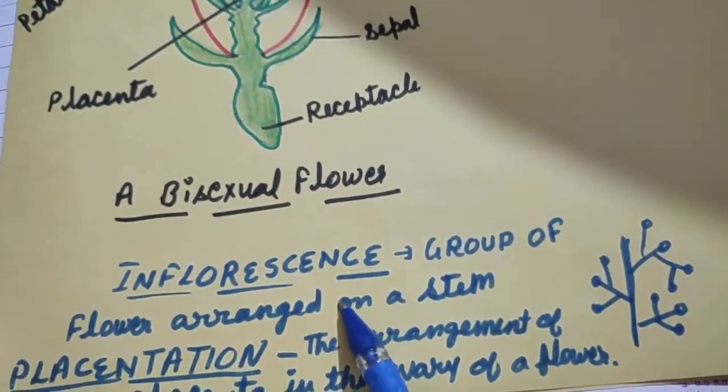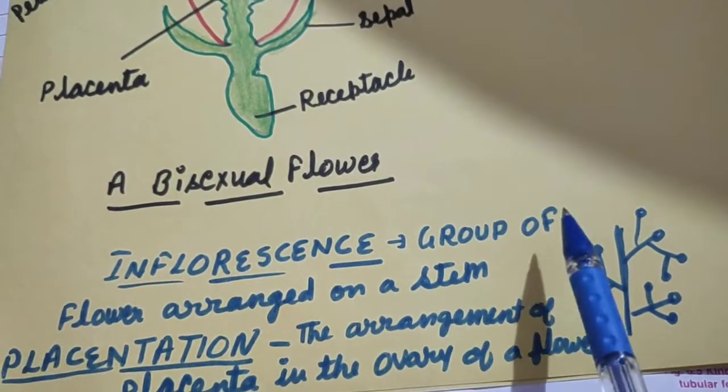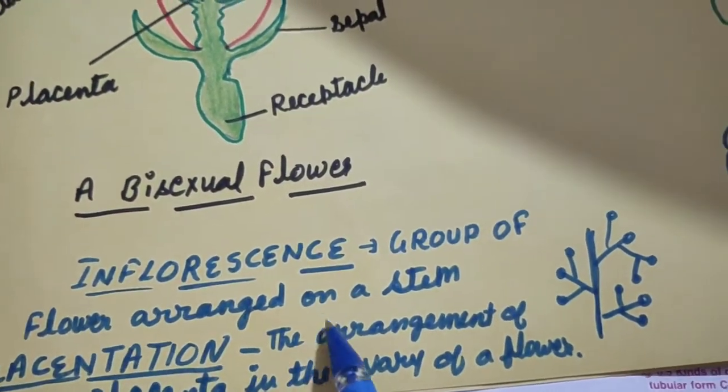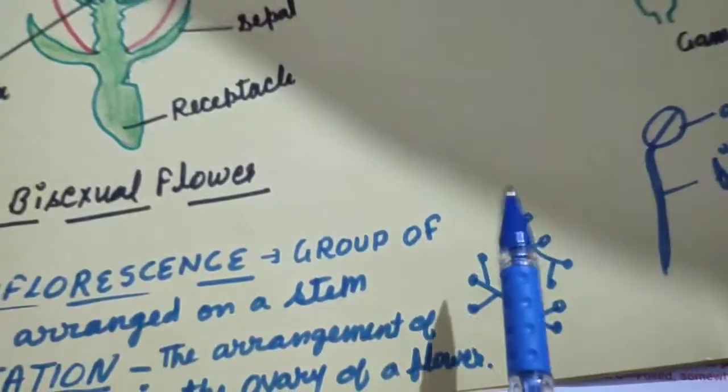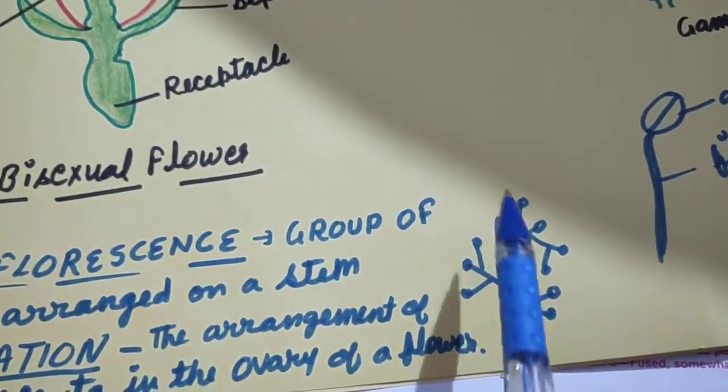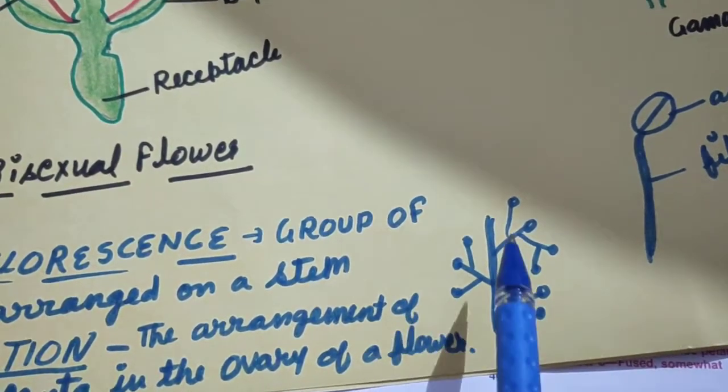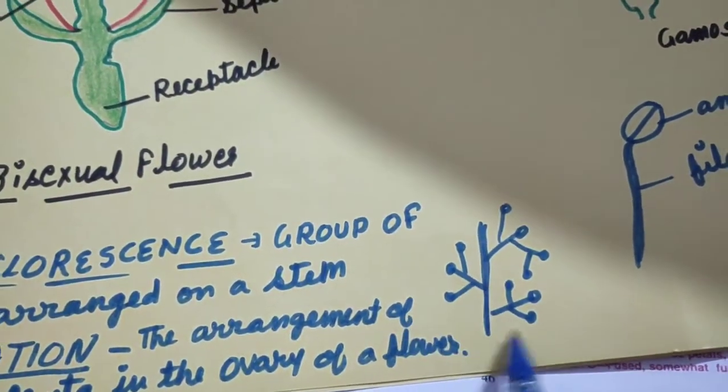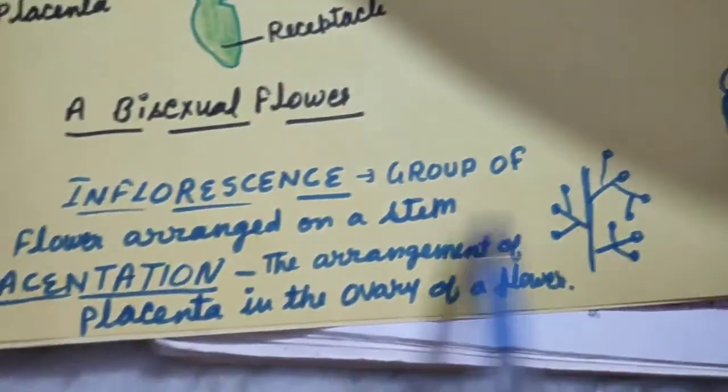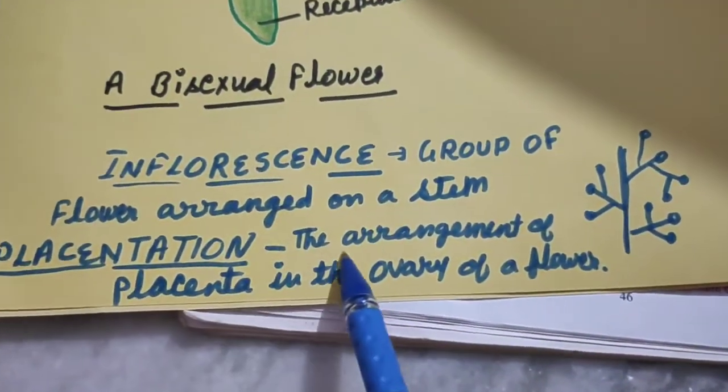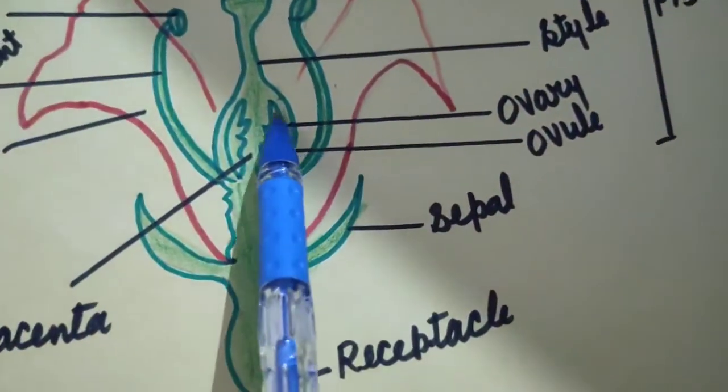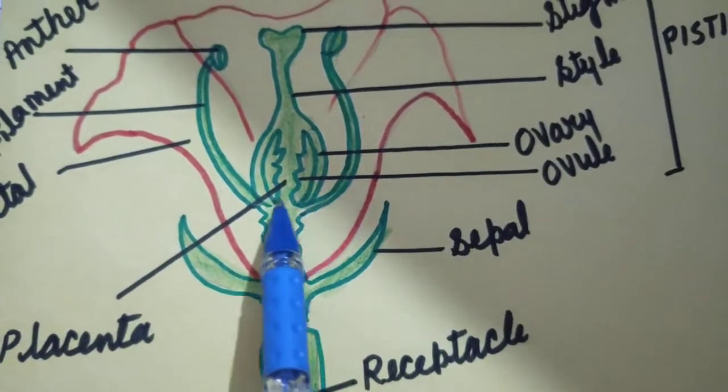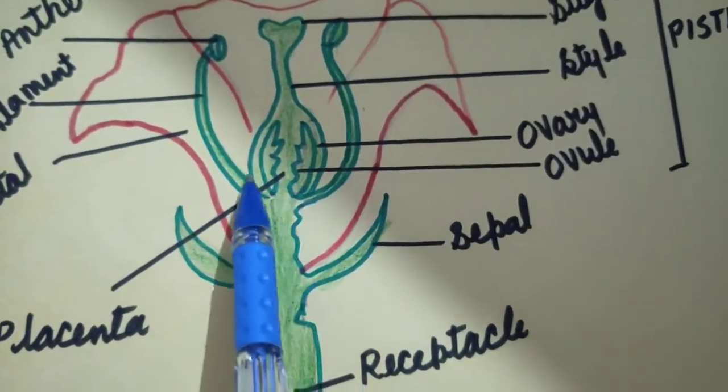What is inflorescence? Inflorescence is a group of flowers arranged on a stem. Many times you see arrangement of flowers on a plant. They may be arranged in different manner. So that arrangement is called inflorescence. Placentation. Placentation is the arrangement of placenta in the ovary of flower. As you see here, this is placentation, how ovules are arranged in ovary.